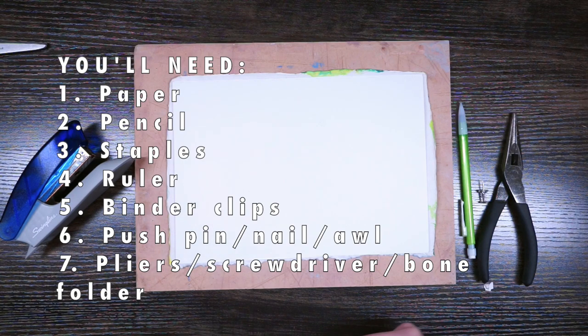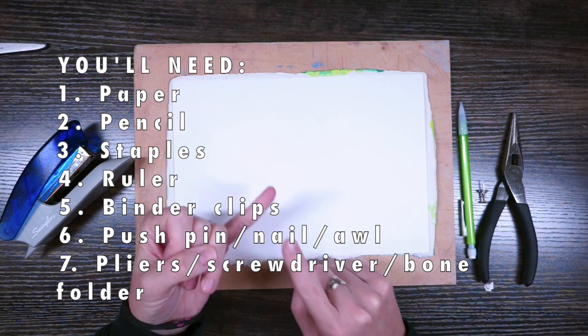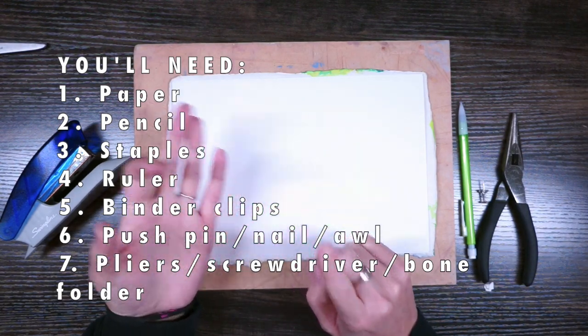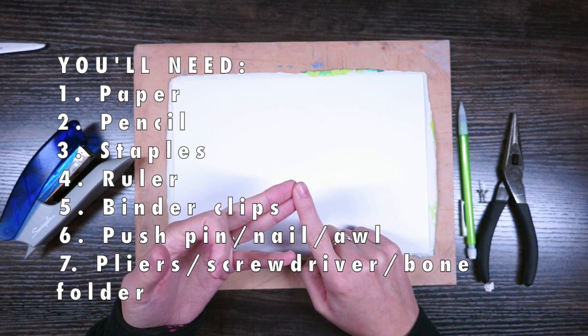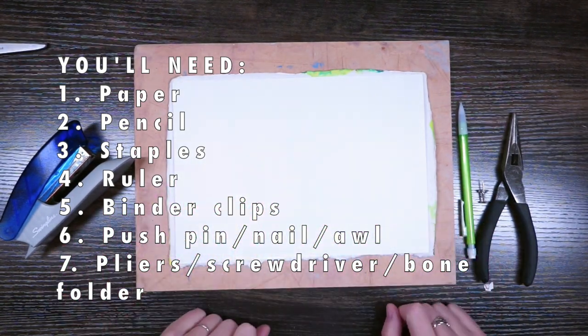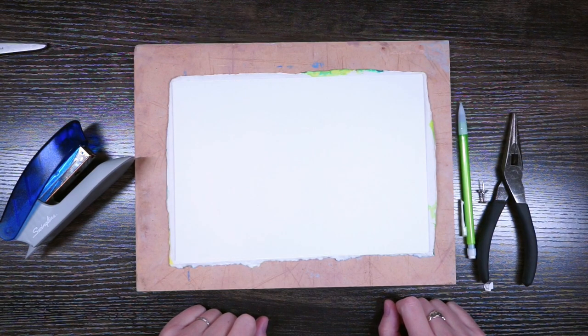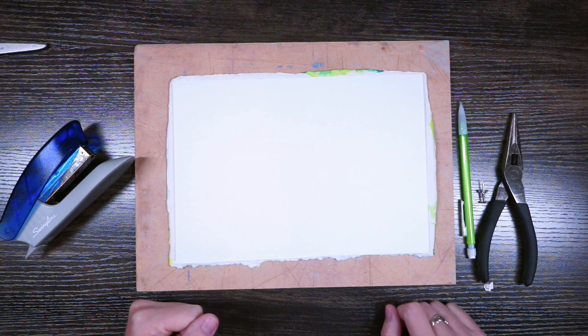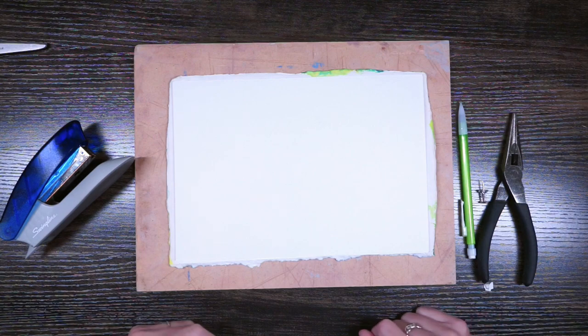Some supplies you need: if you want to be fancy and use actual bookmaking supplies, you could have a bone folder, you could have an awl, you could use book thread. But I'm doing this on the cheap, the super low-tech version, because all of my book supplies are not at home, so I've got to be resourceful and use what I have.